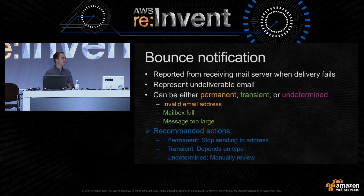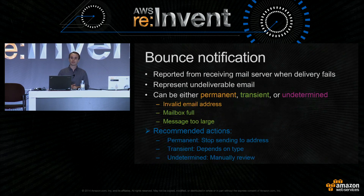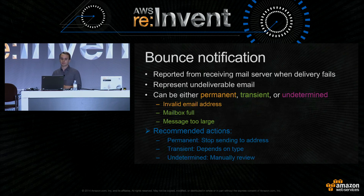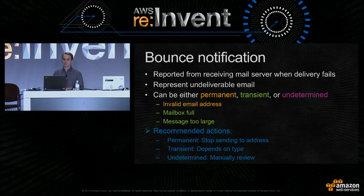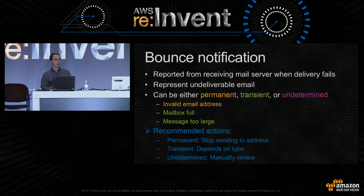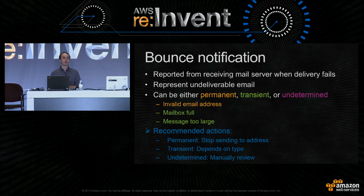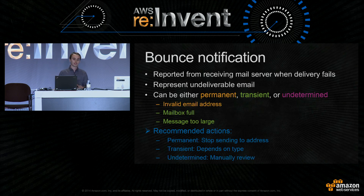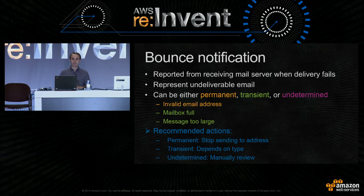Let's talk about the first type: bounces. Bounces are reported from a receiving mail server when delivery fails — they represent undeliverable email. SES will classify your bounces into three different categories: permanent, transient, and undetermined. Permanent bounces indicate that you should no longer send email to a particular recipient, because all future email attempts will likely fail for that recipient. For example, if you receive a bounce due to an invalid recipient email address, it's likely you'll receive the same bounce for any future email sent to that address.